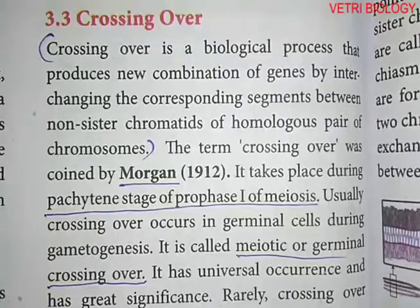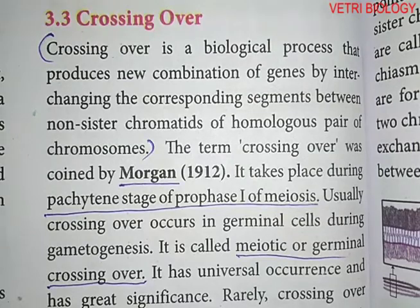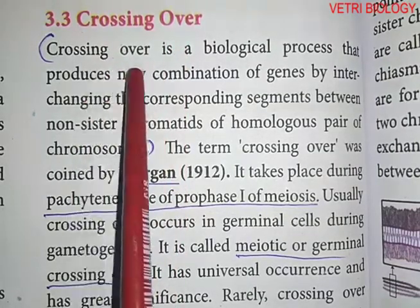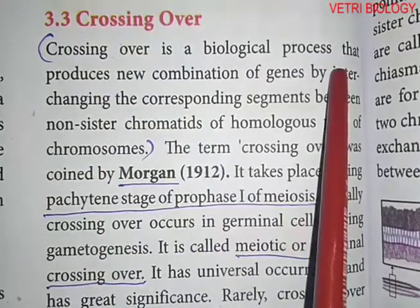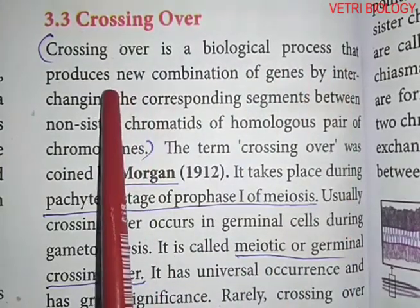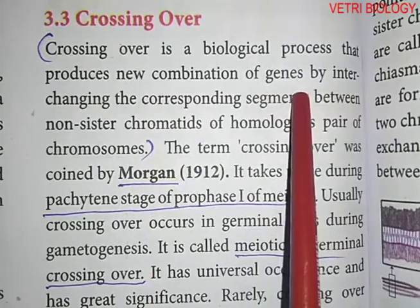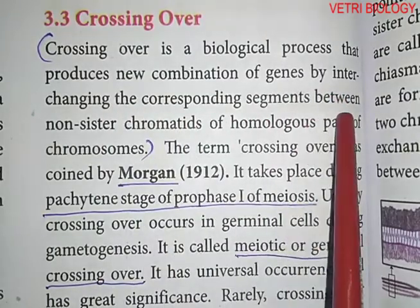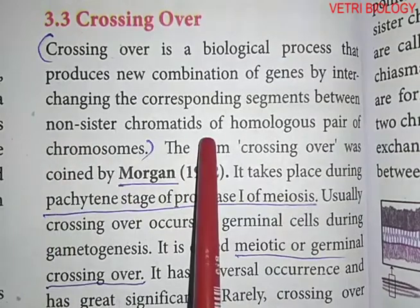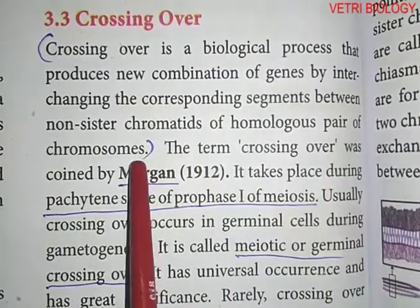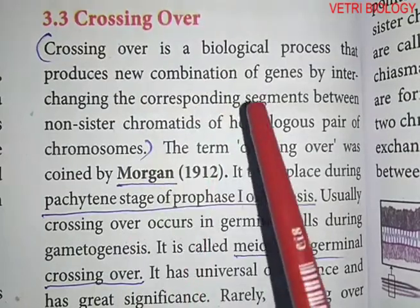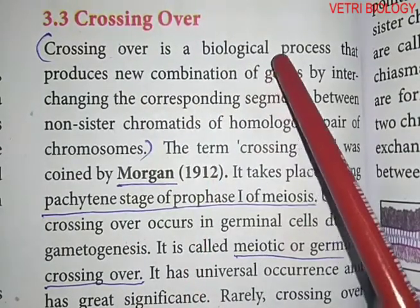We have already learnt about crossing over when we studied linkage. Let us learn some more details in this part. Crossing over is a biological process that produces new combinations of genes by interchanging the corresponding segments between non-sister chromatids of a homologous pair of chromosomes. Crossing over is a biological process because it occurs in living organisms.